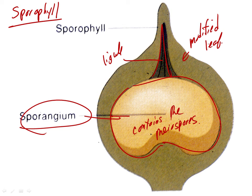This structure here is the ligule. Leaves have sides and we need to learn the terms for those sides. They are confusing, so we'll do it now.